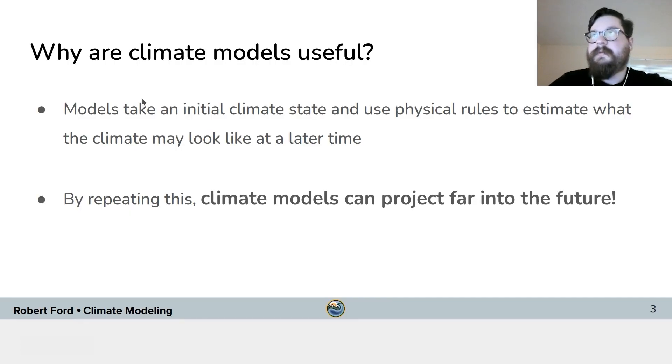In the previous tutorials, you found that climate models can take an initial climate state and use physical rules to estimate what the climate may look like at a later time. Then by repeating this process for many time steps, these climate models can project far into the future.